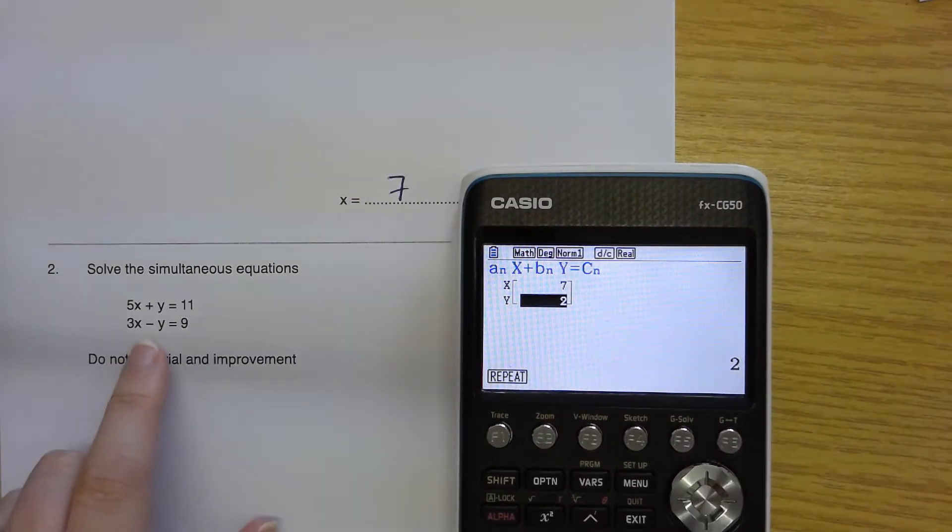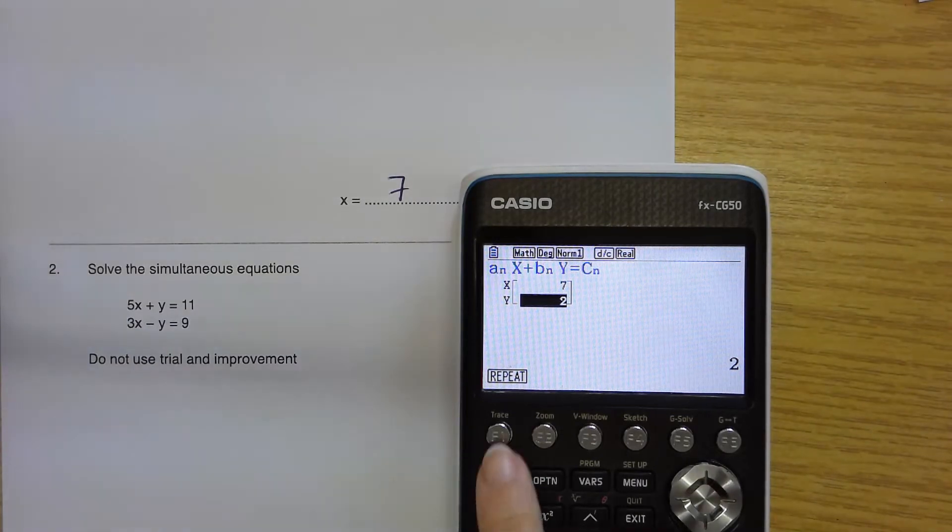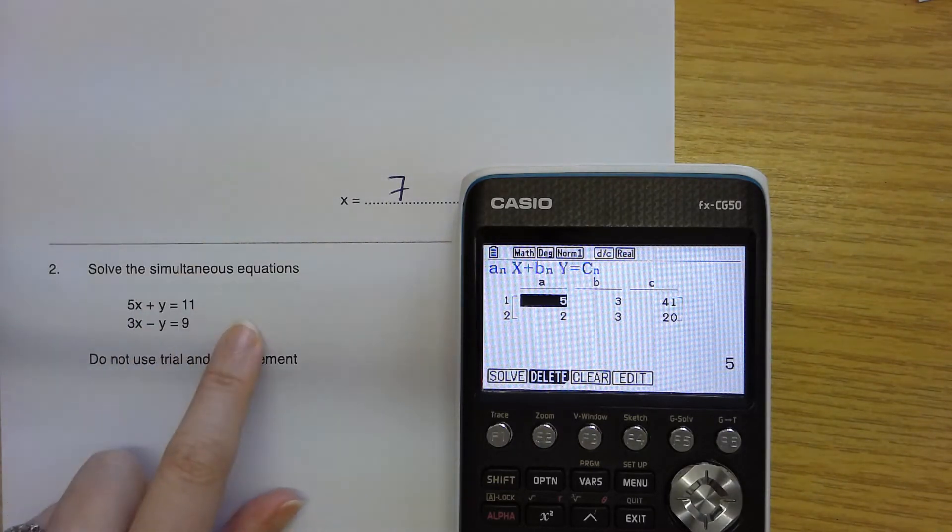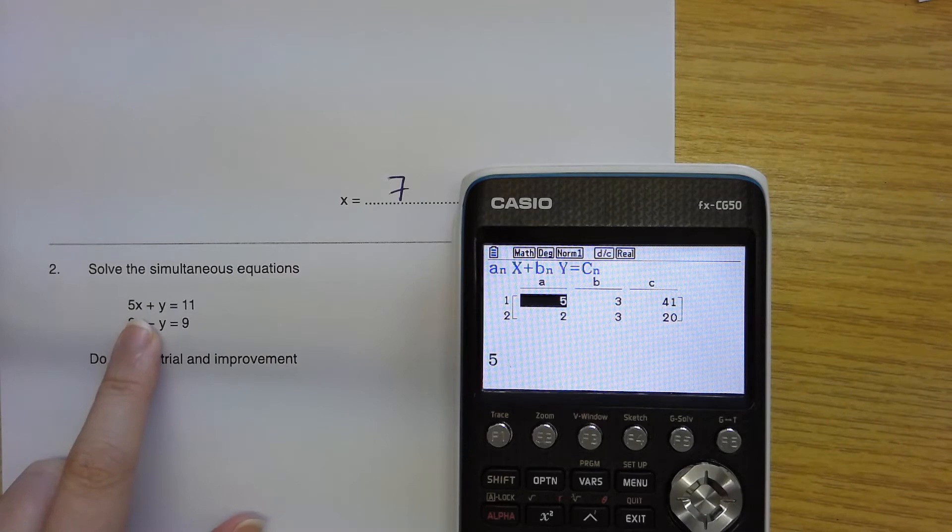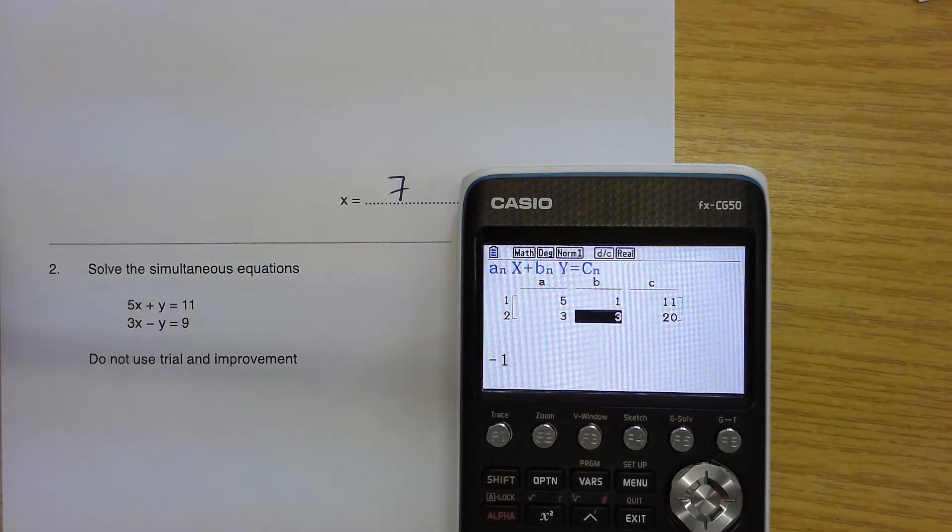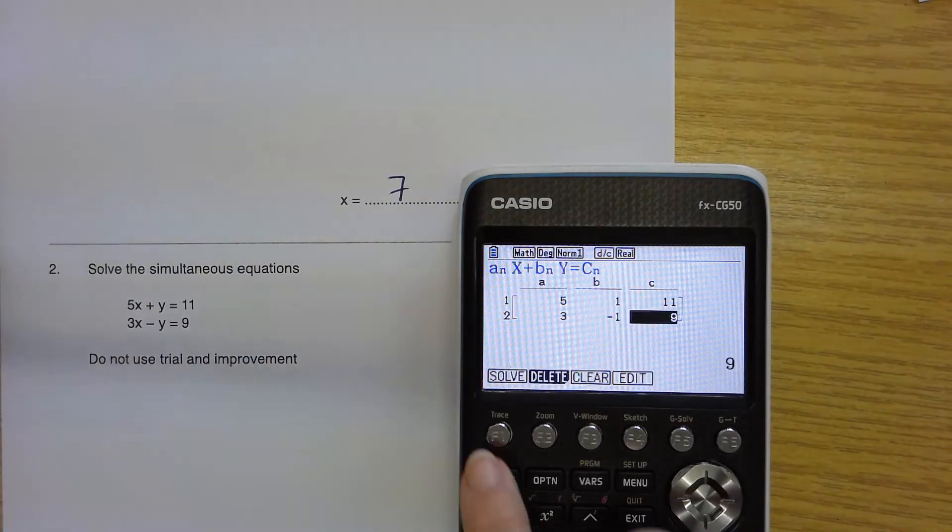Underneath here, it has a negative. So how would we deal with that? If I press repeat, it'll take me back to this screen. And I can just overwrite it. In my columns again, X, Y equals a number. So I've got 5, 1, 11, 3, minus 1, 9. Solve.